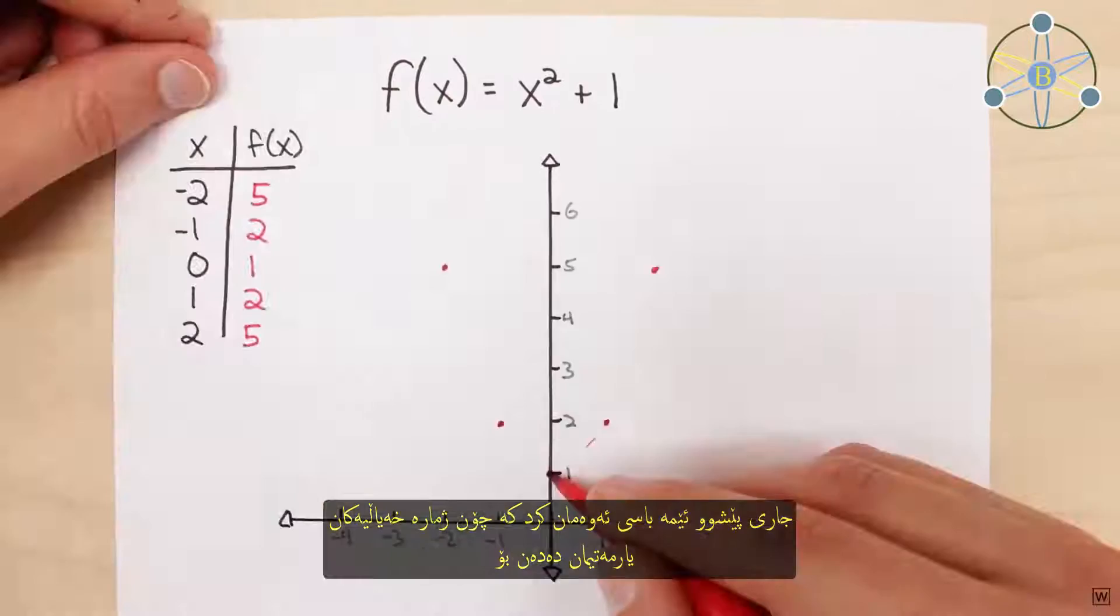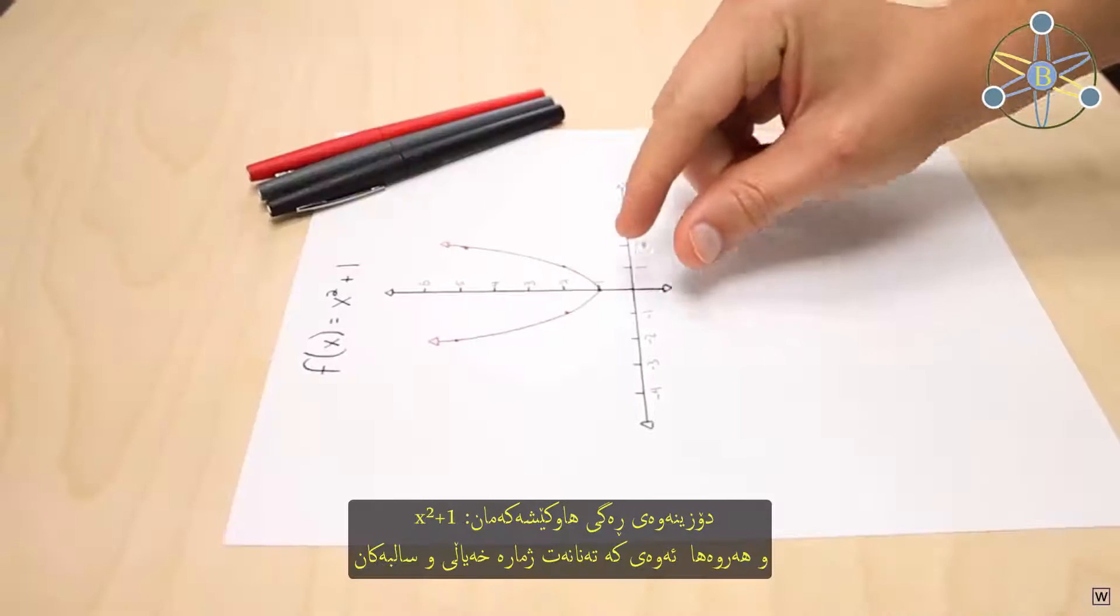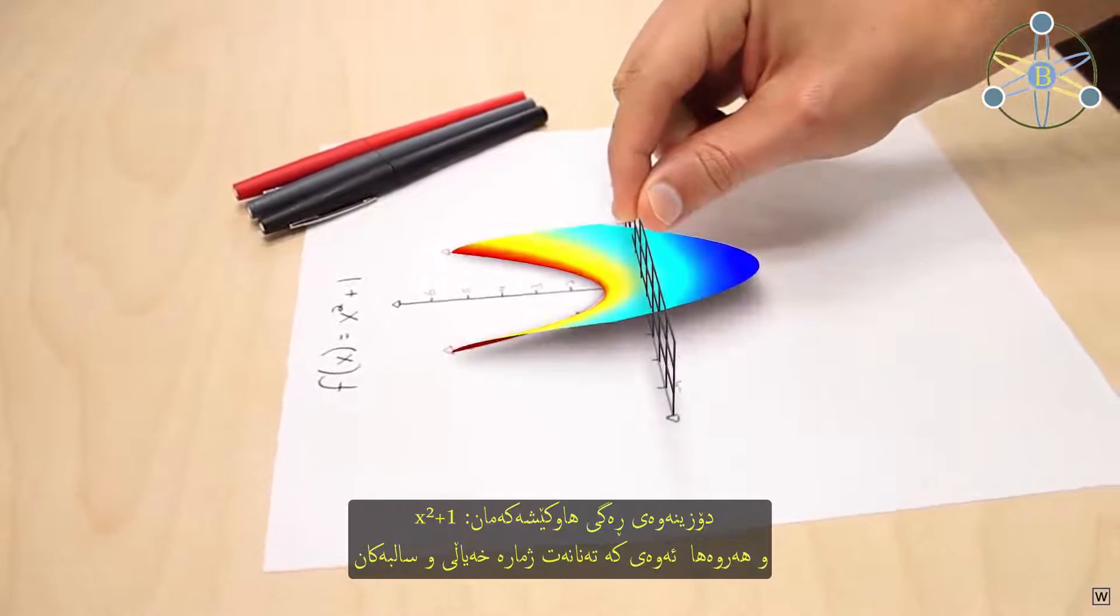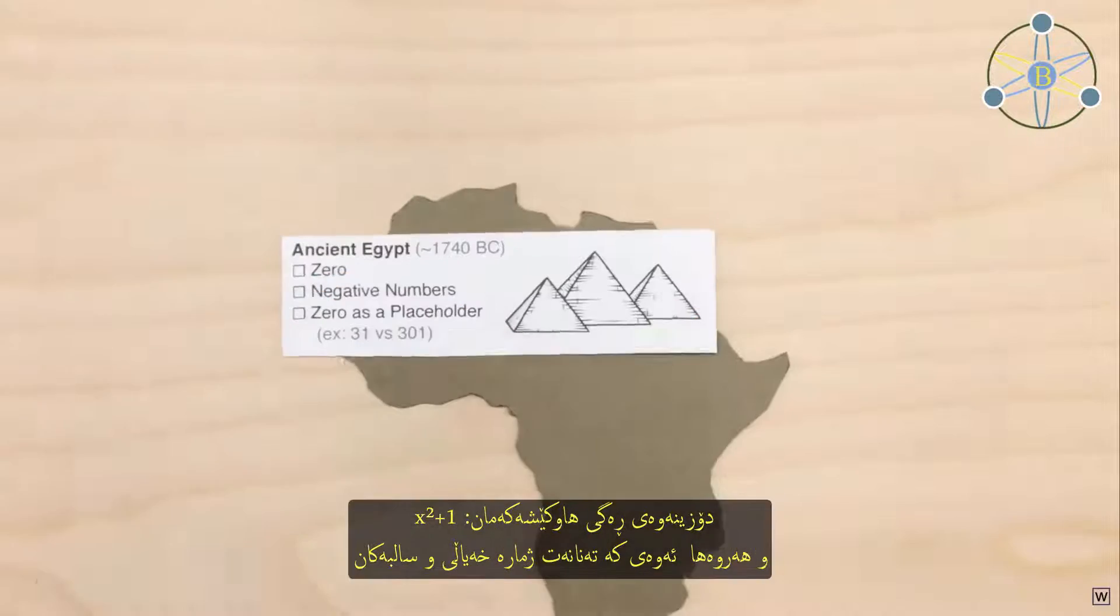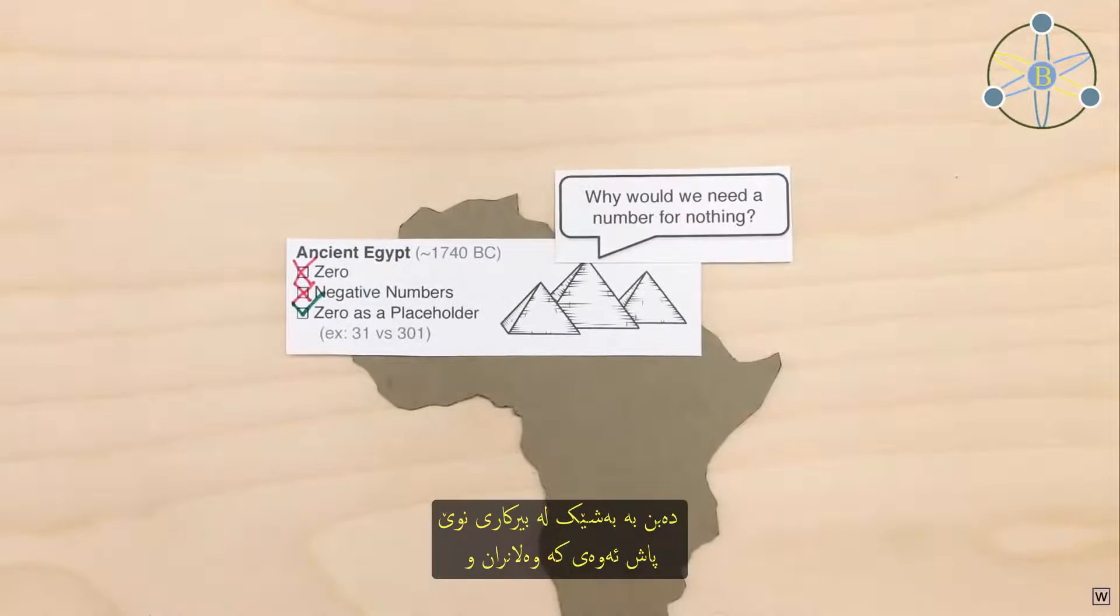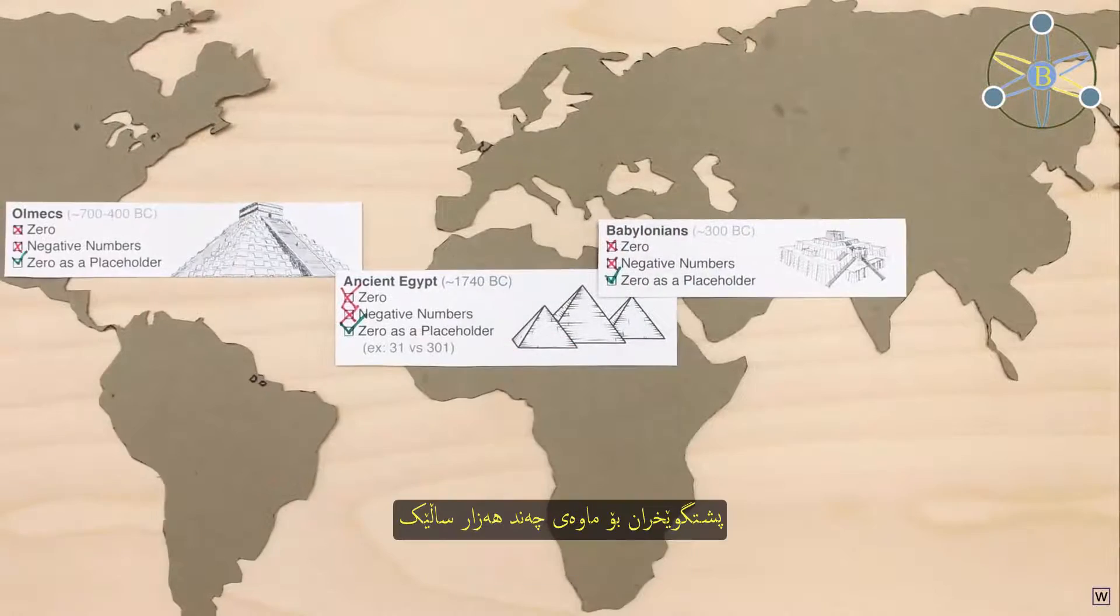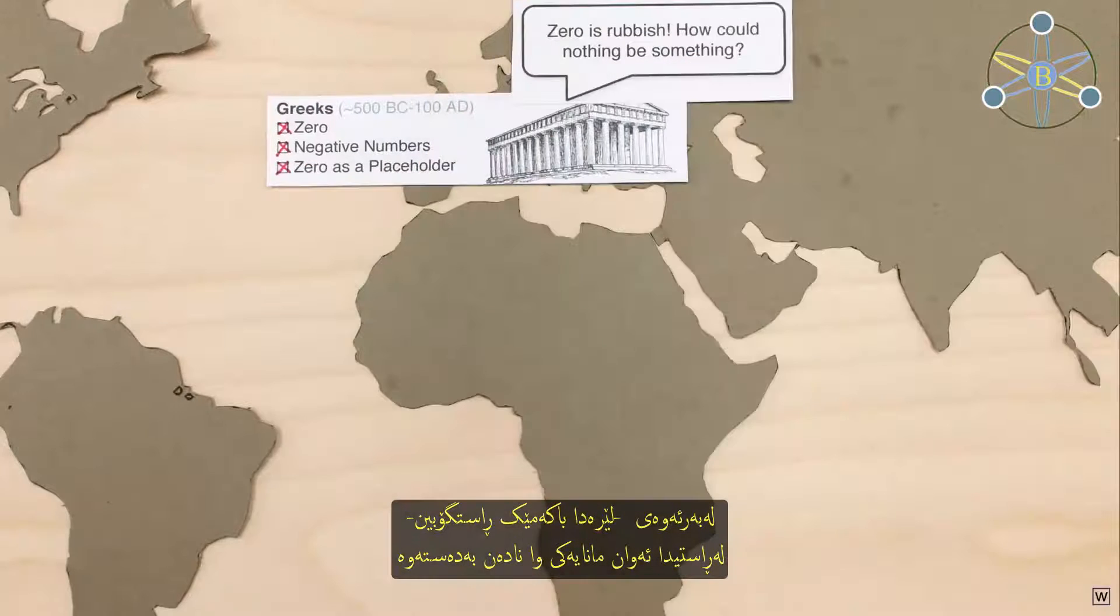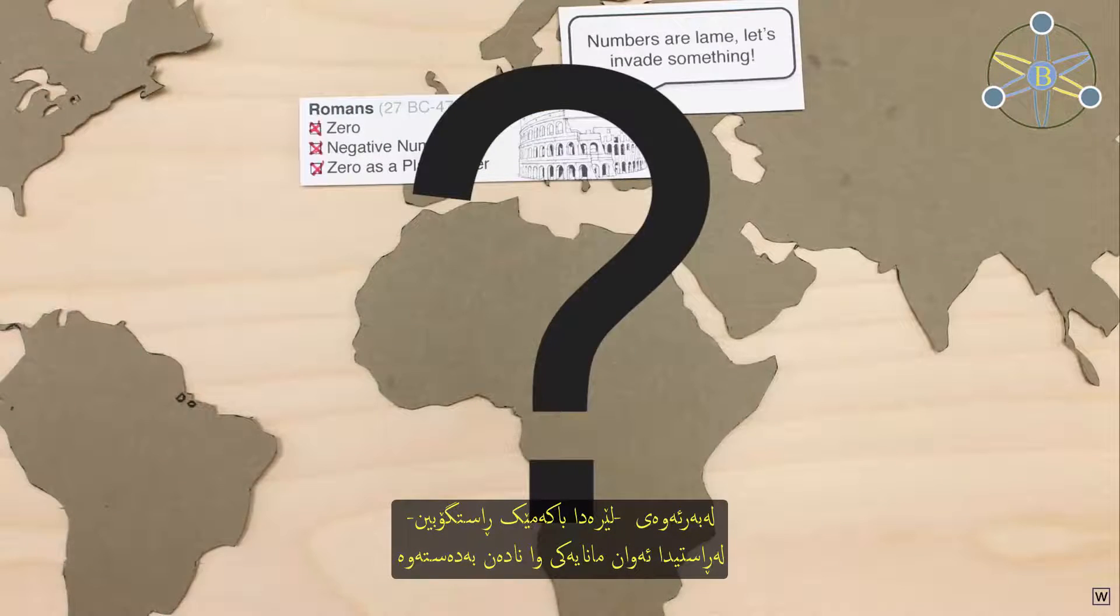Last time, we left off wondering how imaginary numbers could help us find the roots of our equation x squared plus 1. And further, how imaginary and negative numbers even became part of modern mathematics after being avoided and ignored for a couple thousand years, because let's be honest here, they don't really make that much sense.